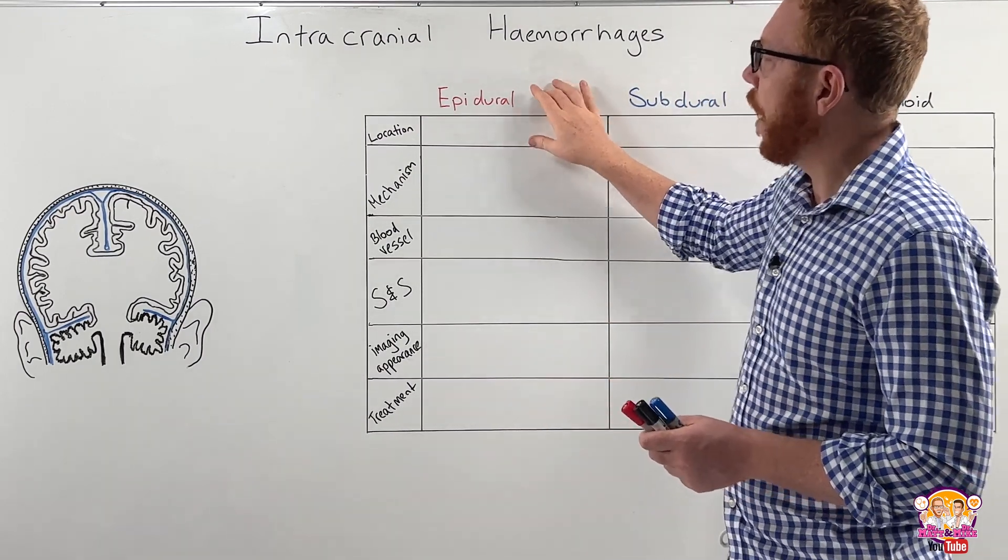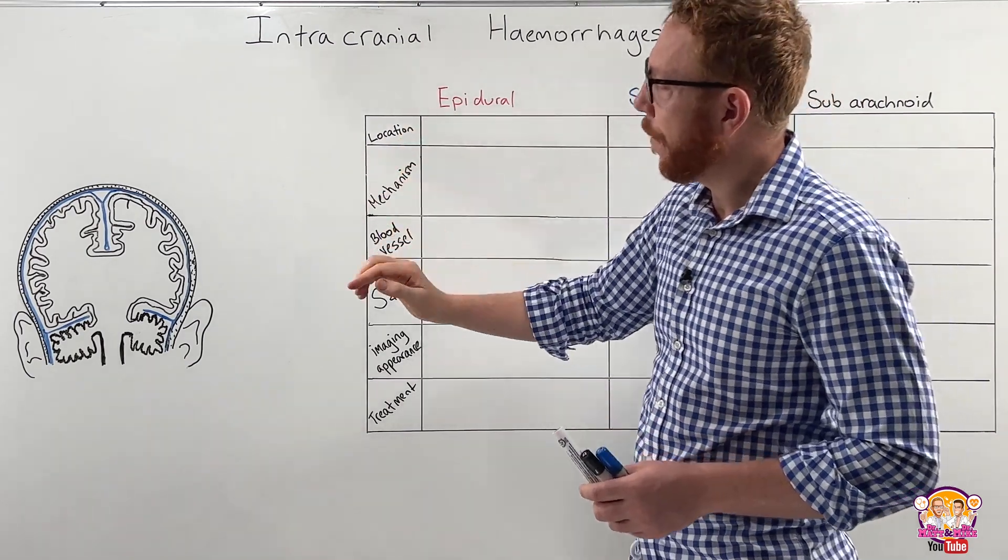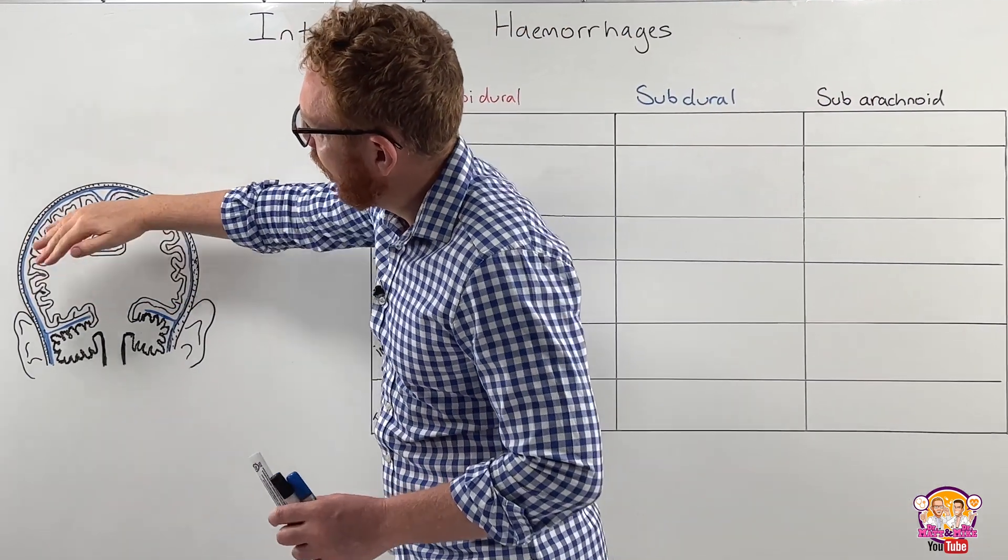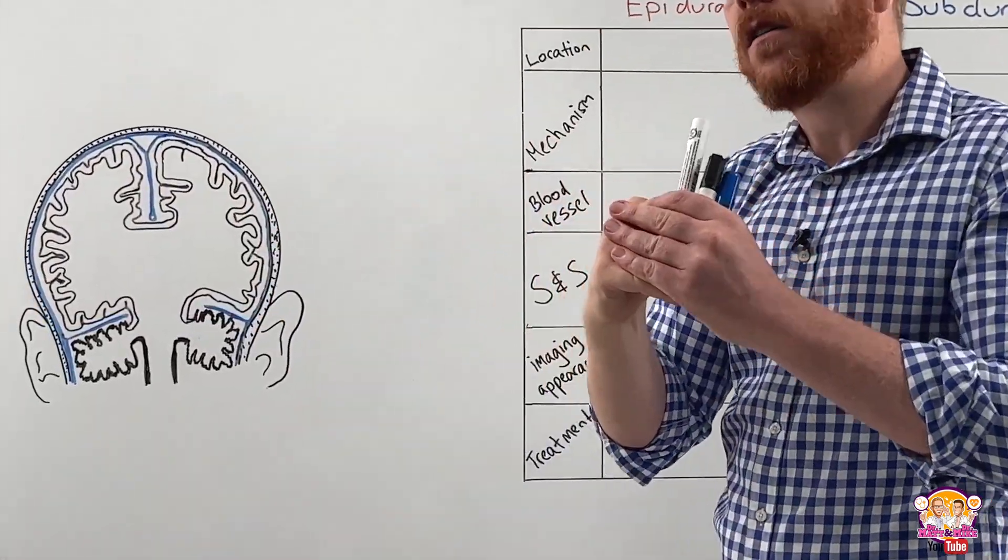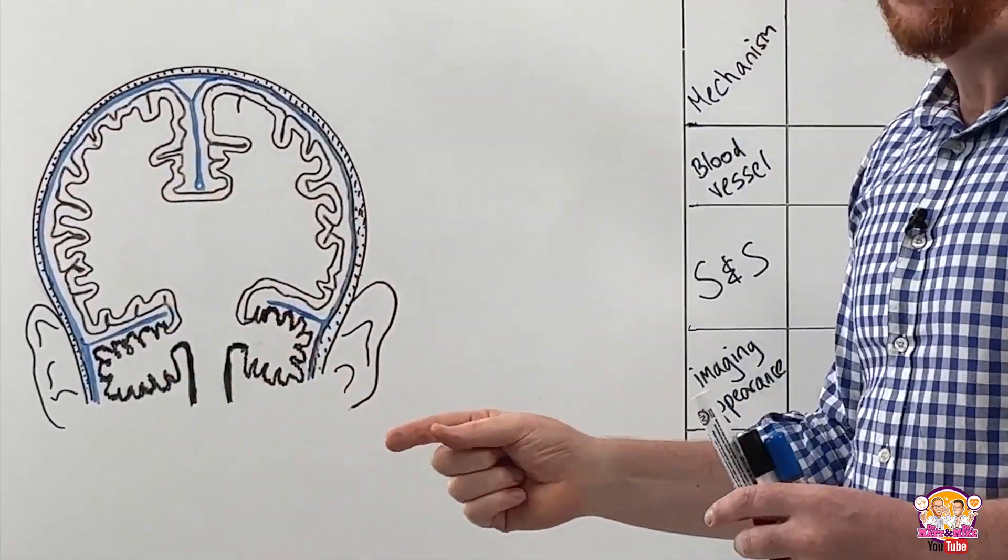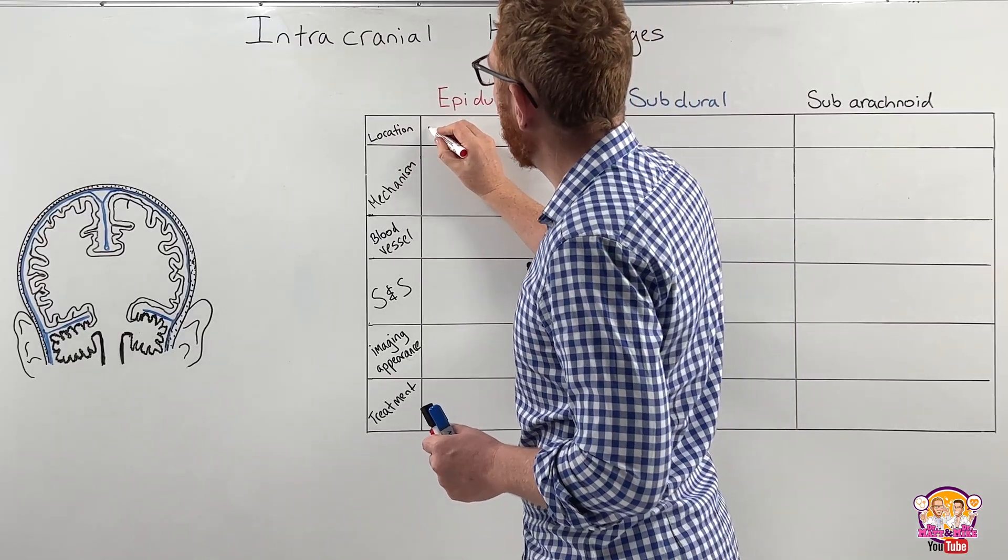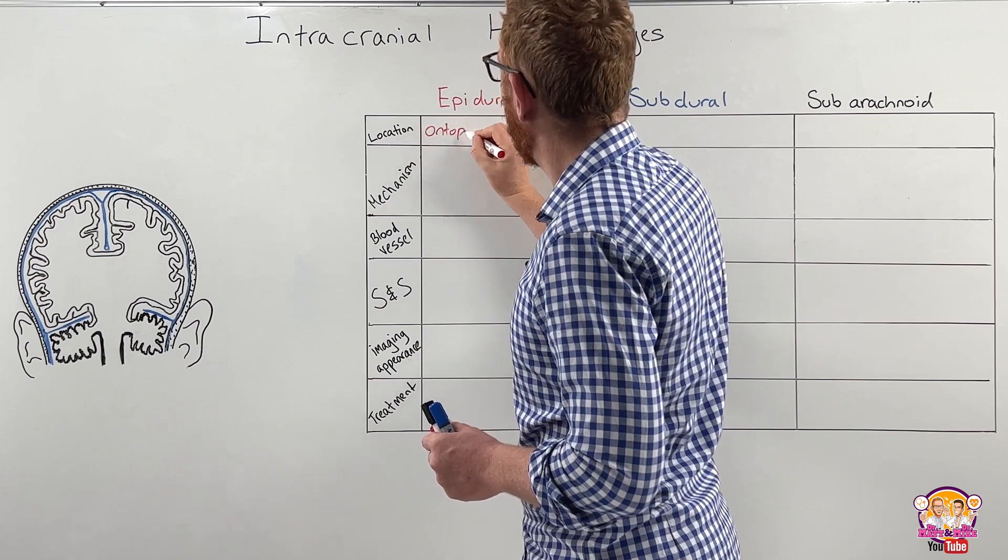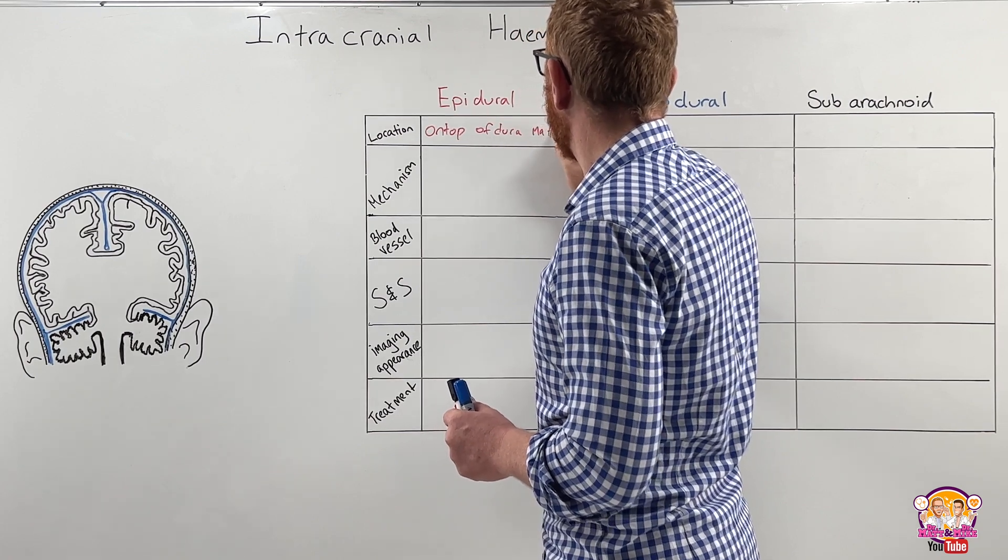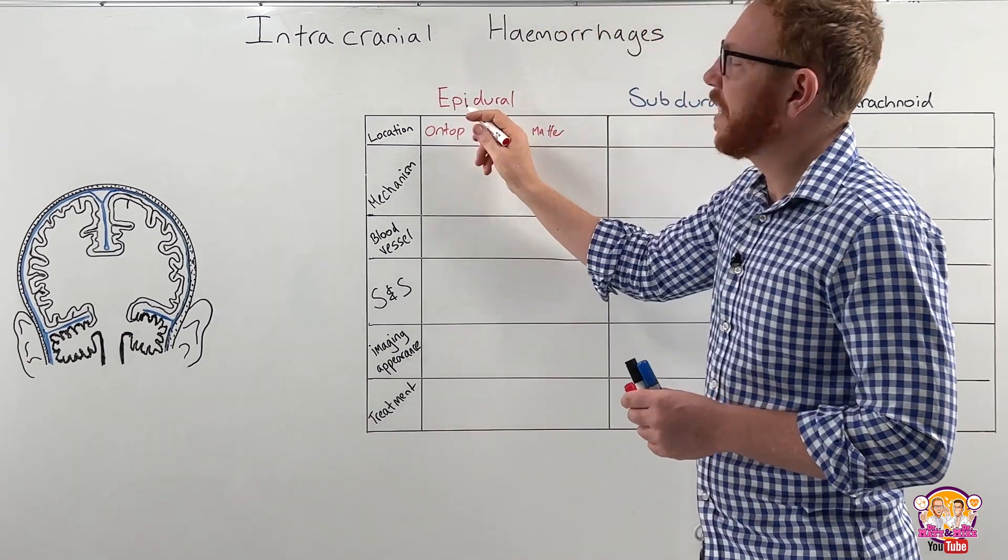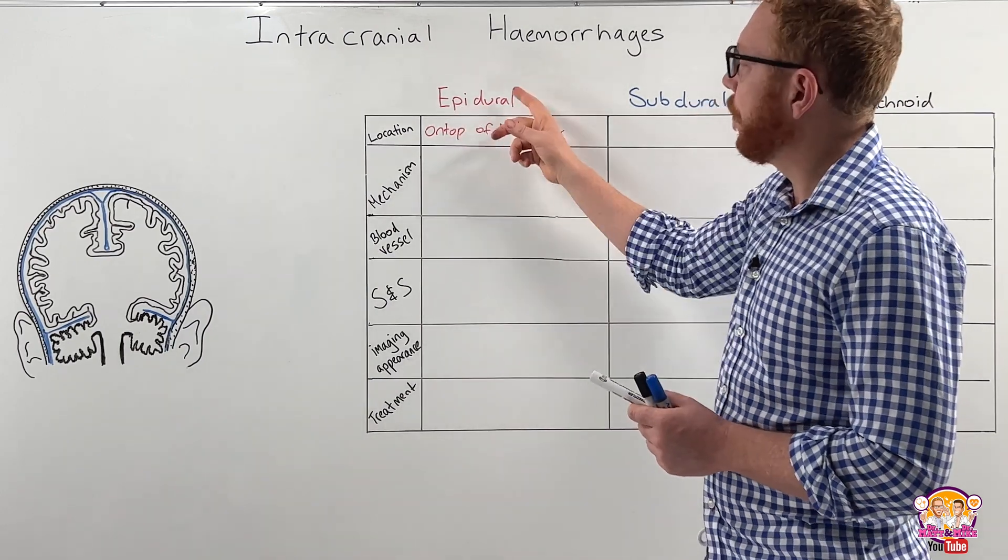Let's focus on the first one which is called an epidural. Epi means upon the dura. So where we have the blue here, the bleed is going to be on top of it between the dura and the skull. There's a potential space there and this is where the bleed is going to take place. The location is on top of the dura mater. This is also sometimes known as an ex-dural bleed but commonly we're going to use epidural.